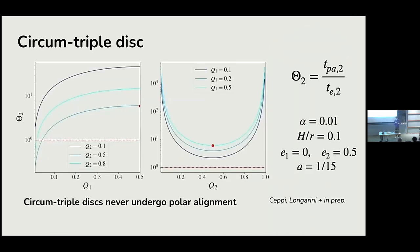These two plots show theta_2 as a function of the two mass ratios q1 and q2. For a wide range of parameters, circumtriple disks never undergo polar alignment — theta_2 is always greater than one — and it can be lower than one only for extreme situations, such as q1 approaching zero. The disk parameters used here are the same as in the numerical simulations shown earlier.